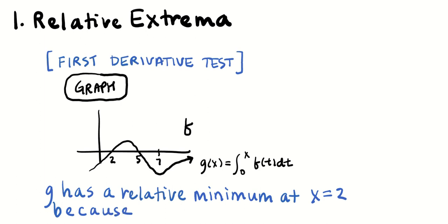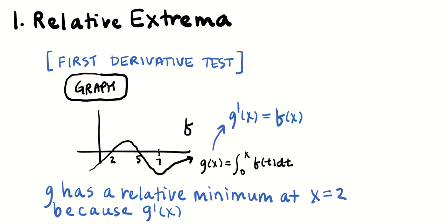I would say 'because g prime of x' — and since this is a function defined by an integral, I want to be really explicit about what the derivative of G is. In this case, g prime of x is f of x. So I like to write: g prime of x, which I know is f of x, goes from negative to positive.